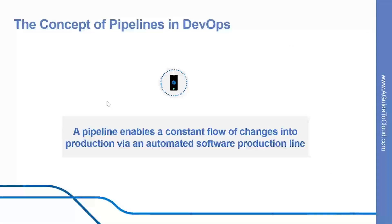Now let's start with understanding the concept of pipelines in DevOps. The core idea is to create a repeatable, reliable, and incrementally improving process for taking software from concept to customer. The goal is to enable a constant flow of changes into production via an automated software production line.